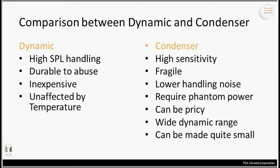On the condenser side, the higher quality and frequency response relates to high sensitivity — they can pick up something very subtle and quiet, like strings, choir, or house-of-worship applications. However, they are more fragile; dropping one could be a one-drop-replace scenario. They also have lower handling noise, require phantom power, and are generally more expensive. They offer a wider dynamic range and frequency response, and can be made quite small — most lavalier and headset-style microphones are condenser-style.